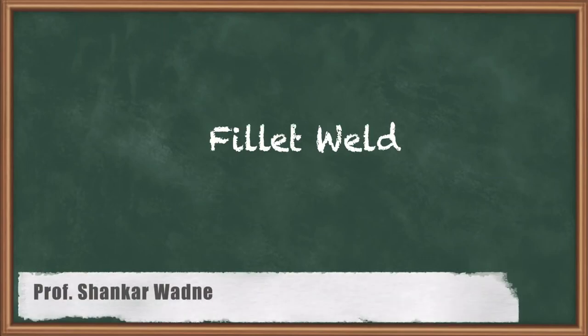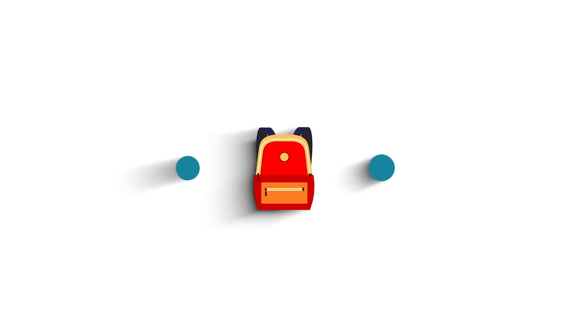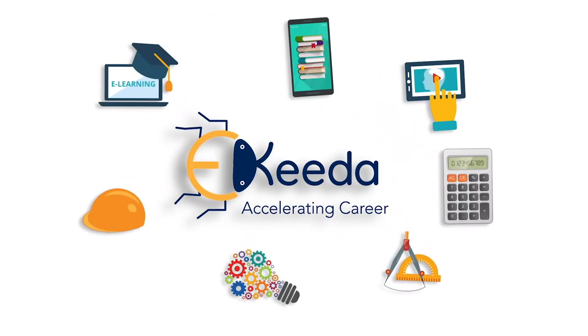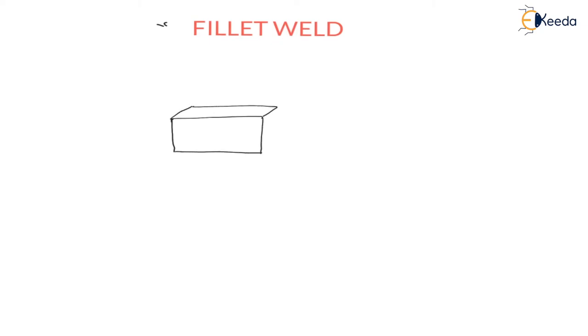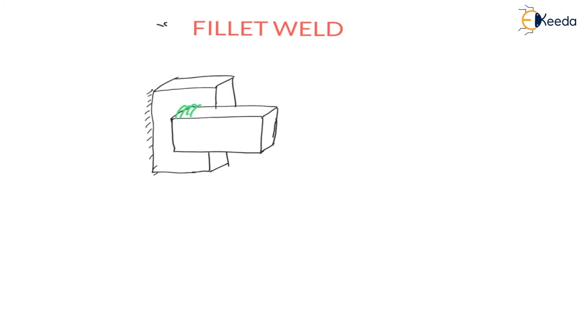Hello my dear students, in this lecture we are going to see fillet welding. In fillet welding, there are two plates. One plate is kept over the other. If I consider one plate like this — this is the first plate — and the other plate is kept behind this plate. The welding is done at this location, like this. This is the welding.